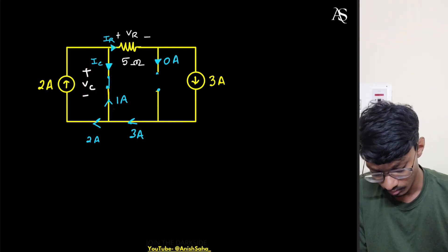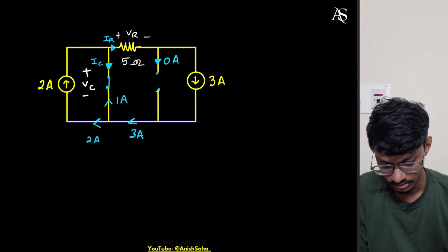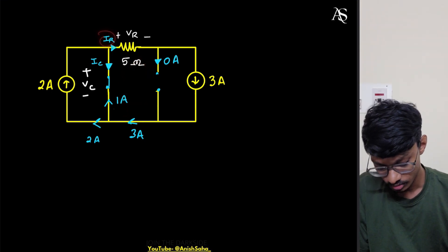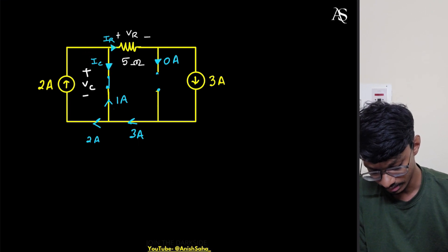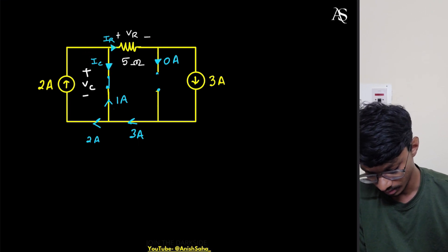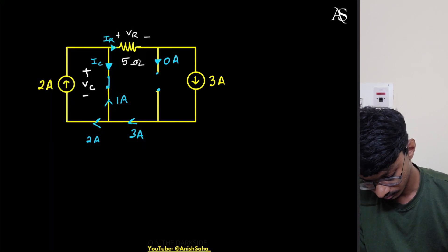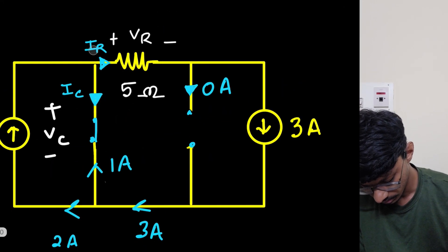Applying KCL, the current IR equals 2 amps plus 1 amp, which gives IR equal to 3 amps.